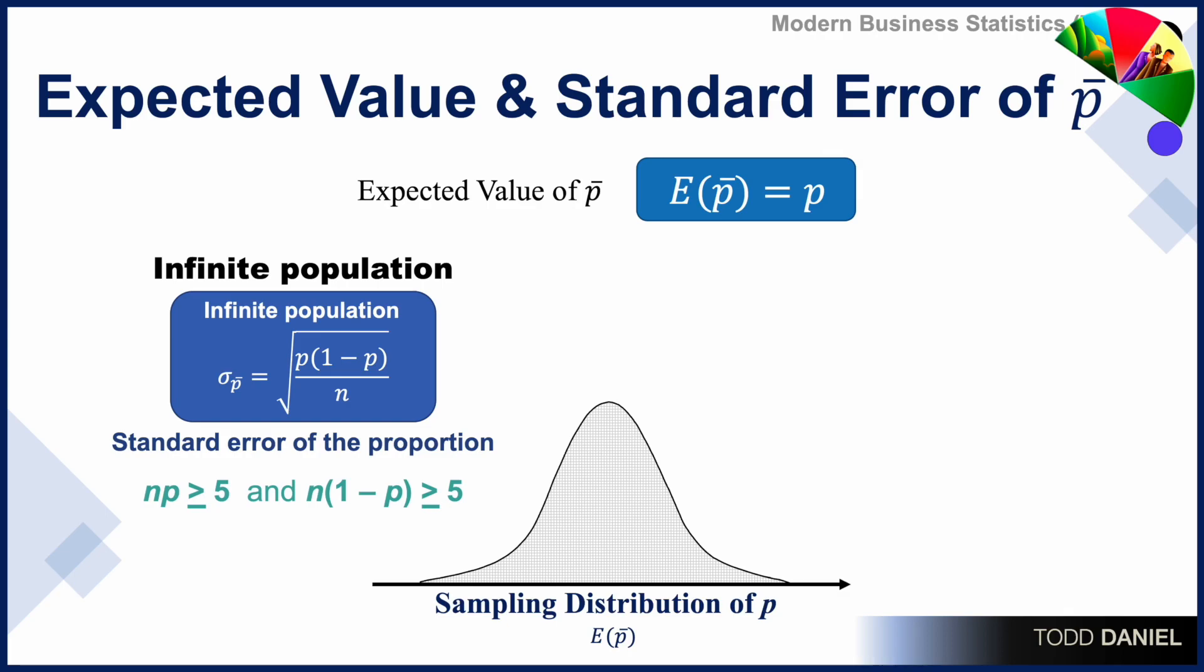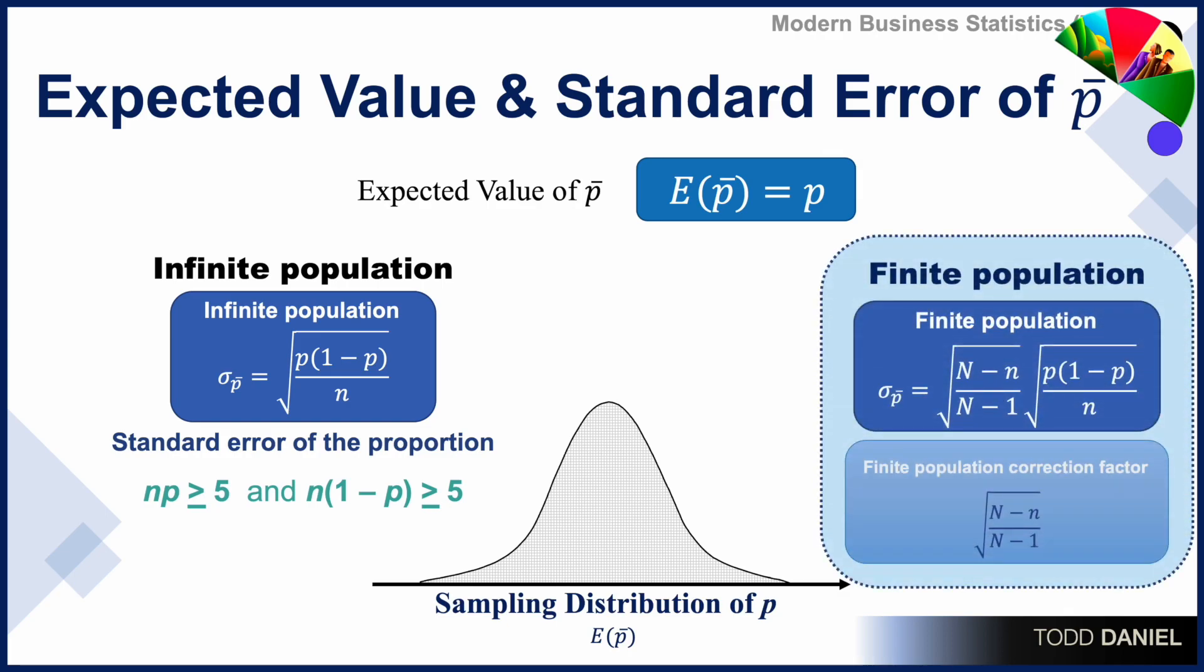If the population is finite, if it is not large enough to estimate using a normal distribution, then the math is a little more complex. The standard error of the proportion for a finite population involves multiplying the infinite population formula by the square root of the population size minus the sample size divided by population size minus 1. This is called the finite population correction factor.